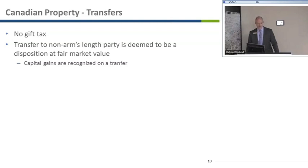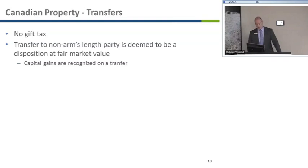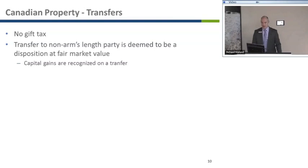If you want to transfer property to a family member, there's no gift tax in Canada. However, you'll need advice from your U.S. advisors regarding gift tax liabilities in the U.S. In Canada, a transfer to any non-arms-length party is deemed to be a disposition at fair market value. So if the value of the property has gone up and you transfer it even to a child or a family trust, capital gains are going to be recognized on that disposition and you'll have to come up with funds to pay the tax.